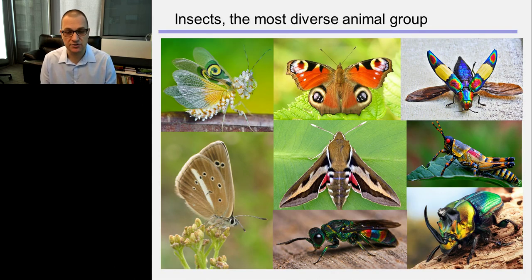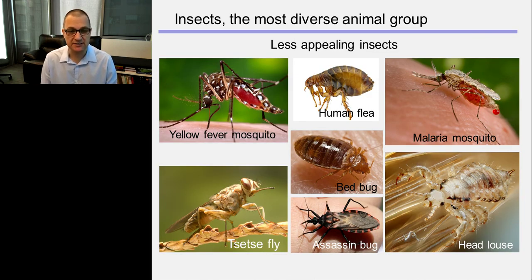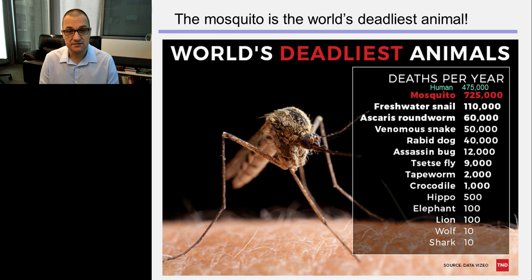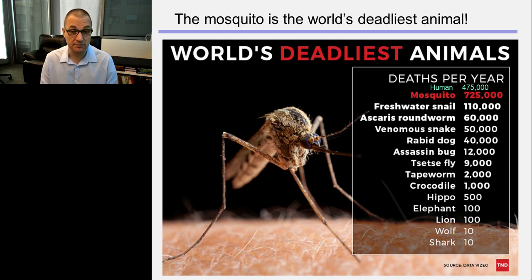Insects are the most diverse animal group. They have a lot of beautiful species, but they also include less appealing species. You can divide them into two groups: agricultural pests, which threaten food safety, and disease vectors, which essentially threaten our lives. They transmit many diseases, and the mosquito is the world's deadliest animal. Mosquitoes transmit so many diseases that they kill more than 700,000 people a year — more than humans themselves — compared to sharks, which kill only 10 people per year.